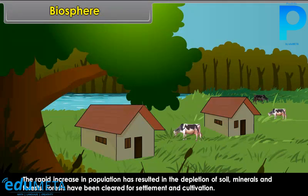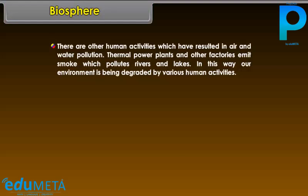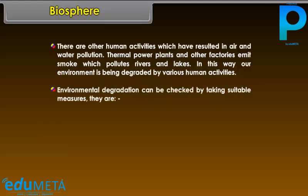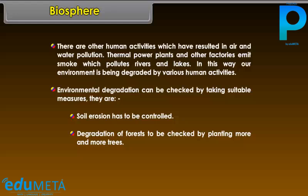Forests have been cleared for settlement and cultivation. Other human activities have resulted in air and water pollution. Thermal power plants and other factories emit smoke which pollutes rivers and lakes, and our environment is being degraded by various human activities. Environmental degradation can be checked by taking suitable measures: soil erosion has to be controlled, and degradation of forests can be checked by planting more and more trees.